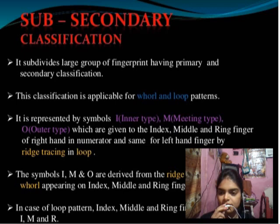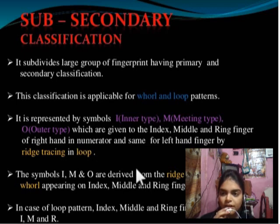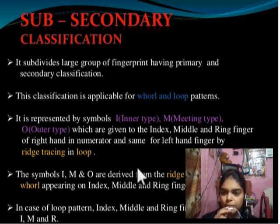First is the Lighted Group Method. Second is the New Method of Ridge Tracing and Ridge Counting. In the Lighted Group Method, if plain arch, tented arch, and radial loop are present in the index finger, then this classification does not occur. If only the whorl and loop patterns are present, then this classification is further proceeded.